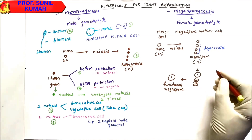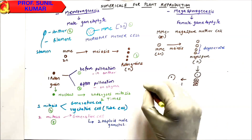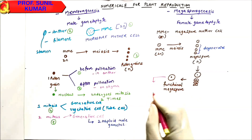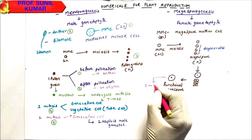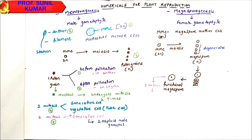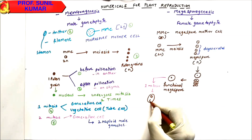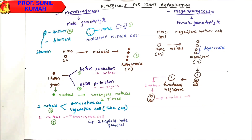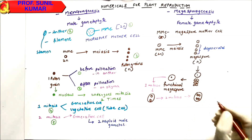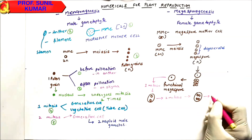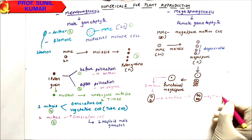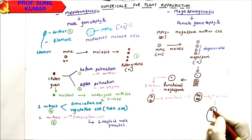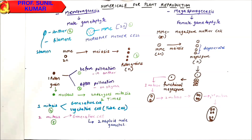Only one functional mega spore is formed if it is a unisporic ovule. If it is bisporic, two are formed; trisporic gives three; tetrasporic gives four. The functional mega spore undergoes first mitosis forming a two-celled stage, second mitosis forming a four-celled stage, and third mitosis forming an eight-celled stage.